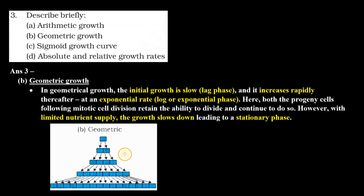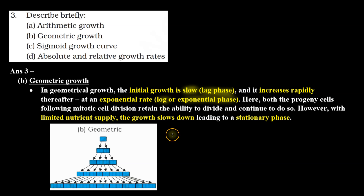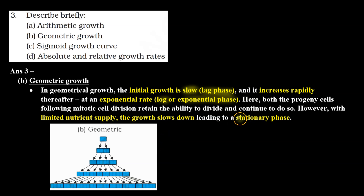In geometric growth, the initial growth is slow — this is called the lag phase. Then it increases rapidly, which is called the exponential phase or log phase. Because nutrient availability is limited and resources are finite, the growth eventually slows down, reaches a stationary phase, and the growth rate becomes constant. So, this is geometric growth.